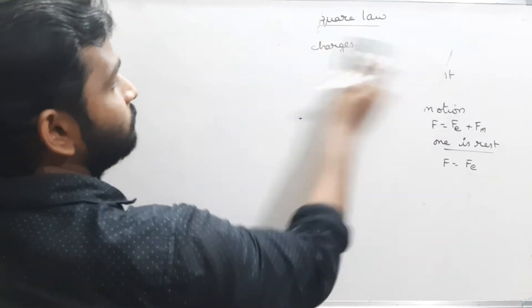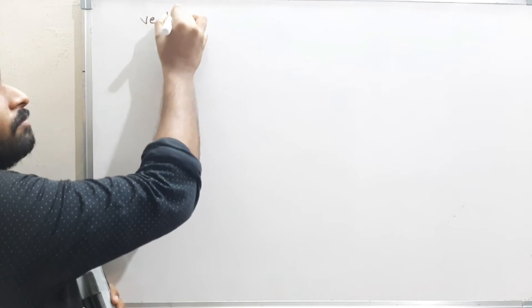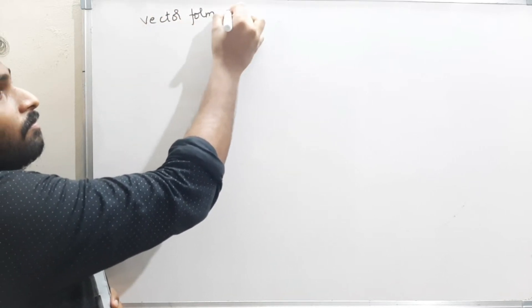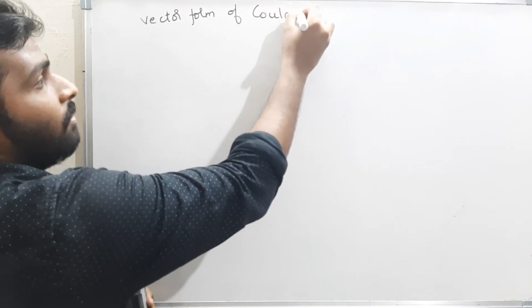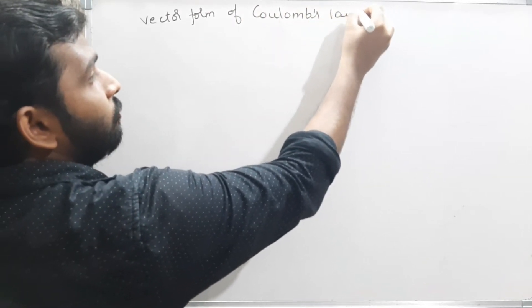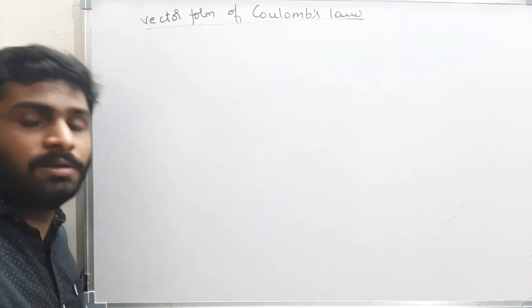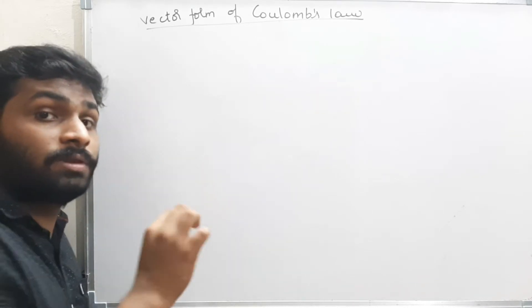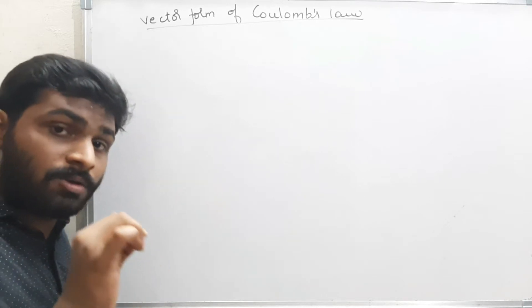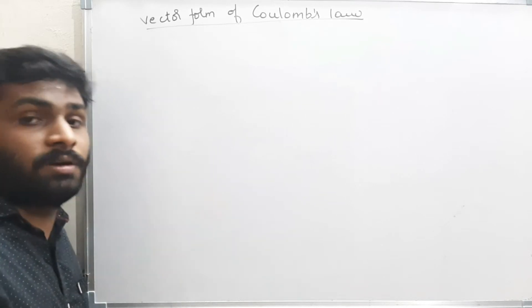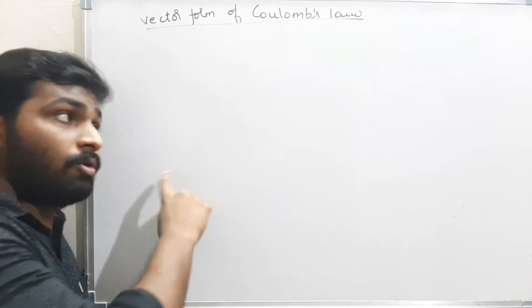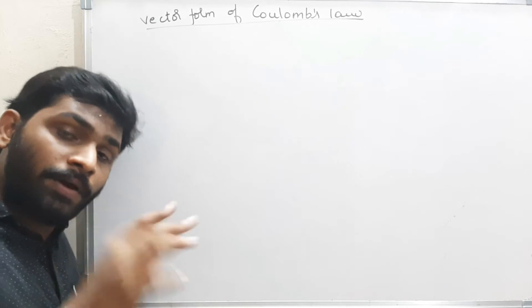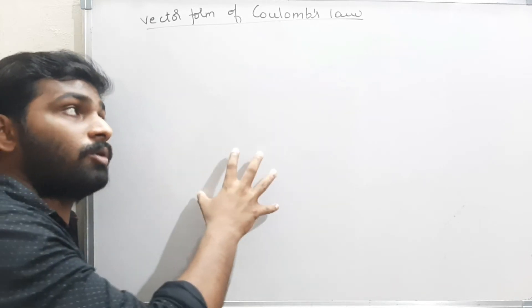Now we will see the vector form of Coulomb's law. This is a little bit tricky and potentially confusing, so observe carefully. You should be very comfortable with vectors — without vectors, it is very difficult to solve problems in electrostatics. Please revise vectors before starting electrostatics.